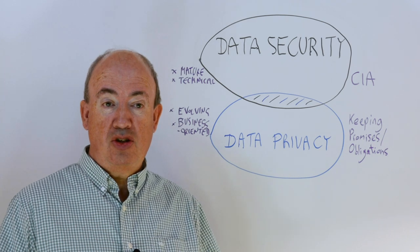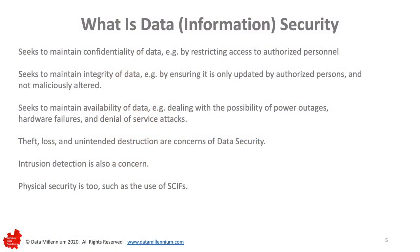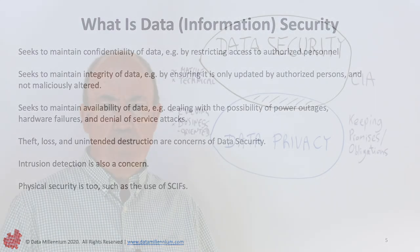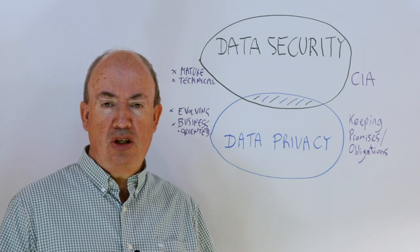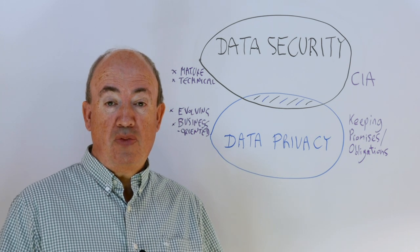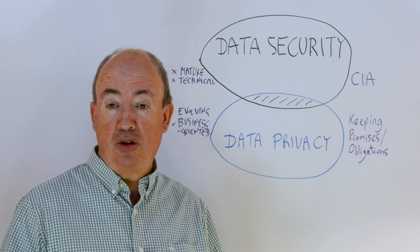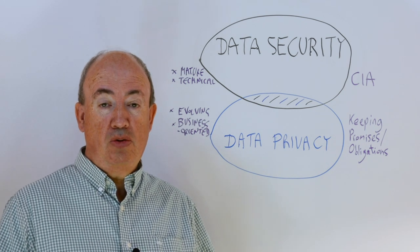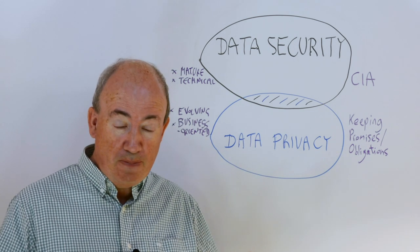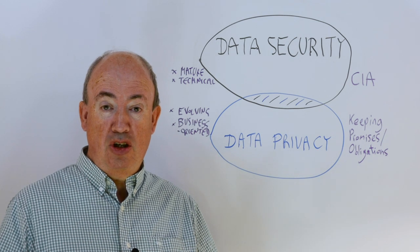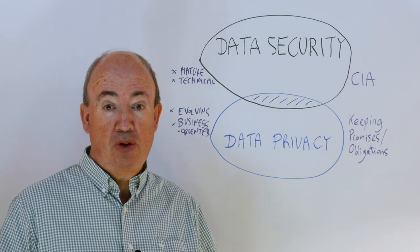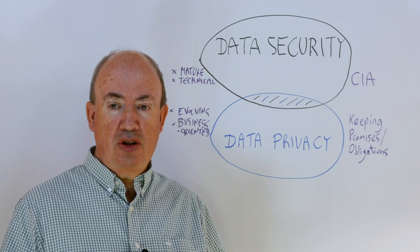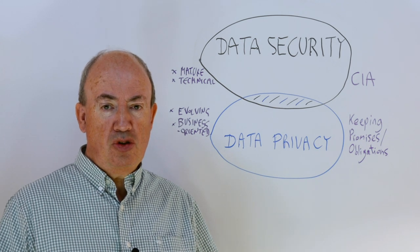Let's go to data privacy and data security. Data security has been around, at least traditionally, for quite a while, and it's typically concerned with confidentiality, integrity, and availability. Confidentiality might be implemented in part by access controls, integrity in part by preventing malicious alterations of data, and availability in part by dealing with possible hardware failures. Data security is also concerned with things like theft, loss, unintended destruction of data, intrusion detection, and physical security.